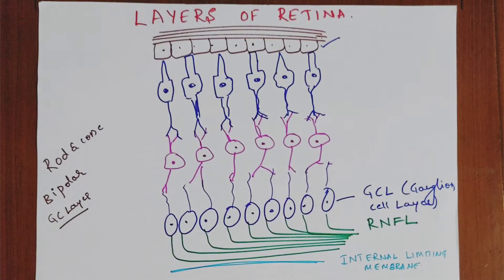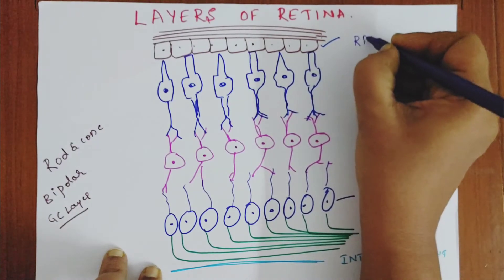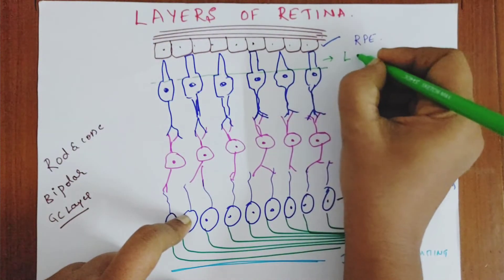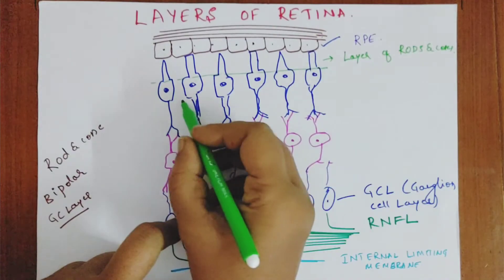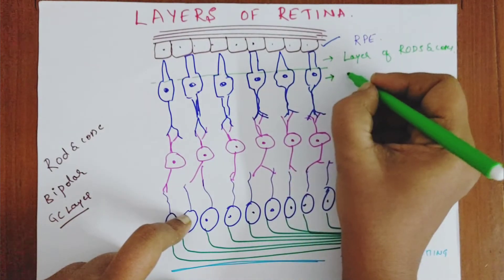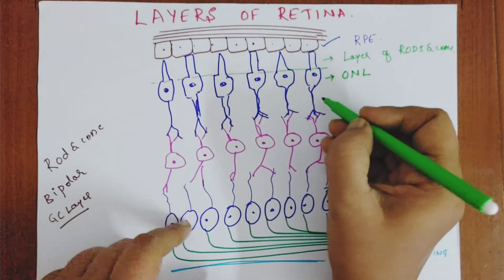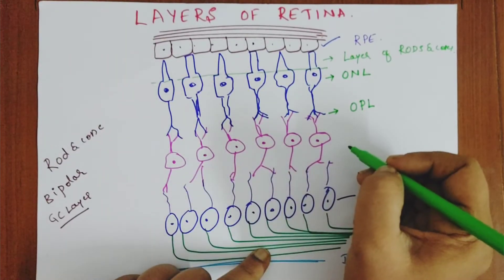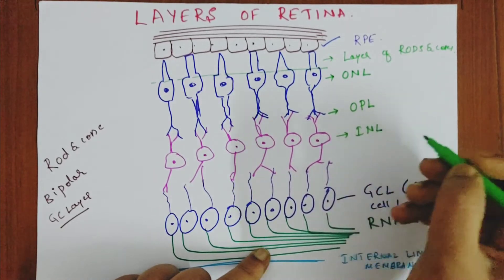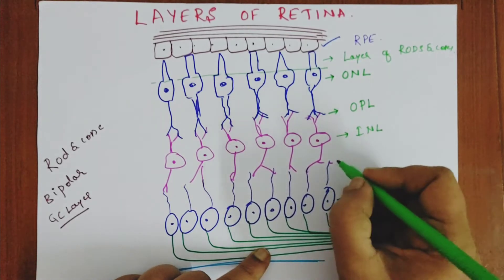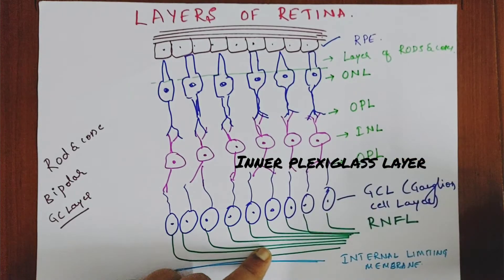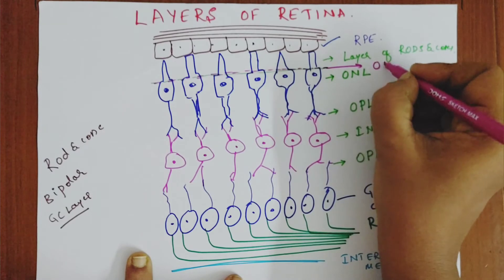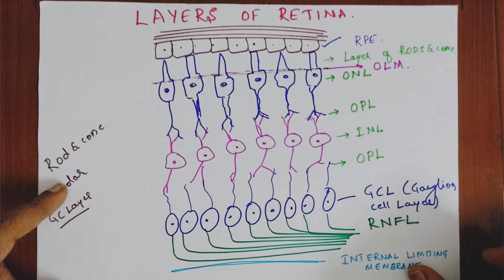Now you can go on naming the layers of the retina. First is the retinal pigment epithelium. The outer segment of the rods and cones constitutes the layer of rods and cones. The nuclei of the rods and cones constitute the outer nuclear layer. The axons of the rods and cones synapsing with the bipolar cells constitute the outer plexiform layer. The nuclei of the bipolar cells constitute the inner nuclear layer. The synaptic ends of the bipolar cells meeting with the ganglion cell layer constitute the inner plexiform layer. There is also a mesh-like structure keeping all the rods and cones in place — this is called the outer limiting membrane.